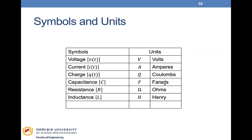Let's familiarize ourselves with the symbols and units. Voltage: symbol V, unit volts. Current: symbol I, unit amperes (A). Charge: symbol Q, unit coulombs. Capacitance: symbol C, unit farads (F). Resistance: symbol Ω, unit ohms. Inductance: symbol H, unit henries. These are the units and symbols for electrical systems.